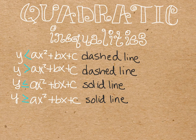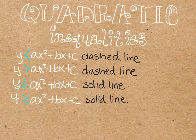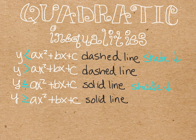And then, after we've graphed it, if it is a less than or a less than or equal to, we're going to shade below the parabola. And if it is a greater than or greater than or equal to, we're going to shade up above the parabola.